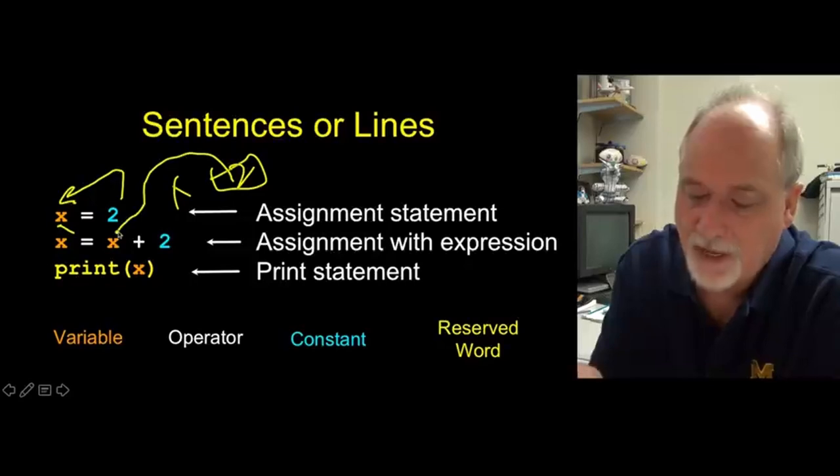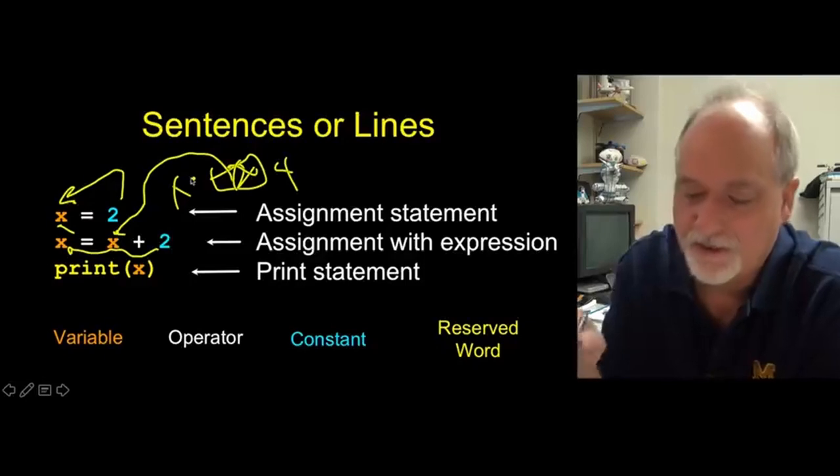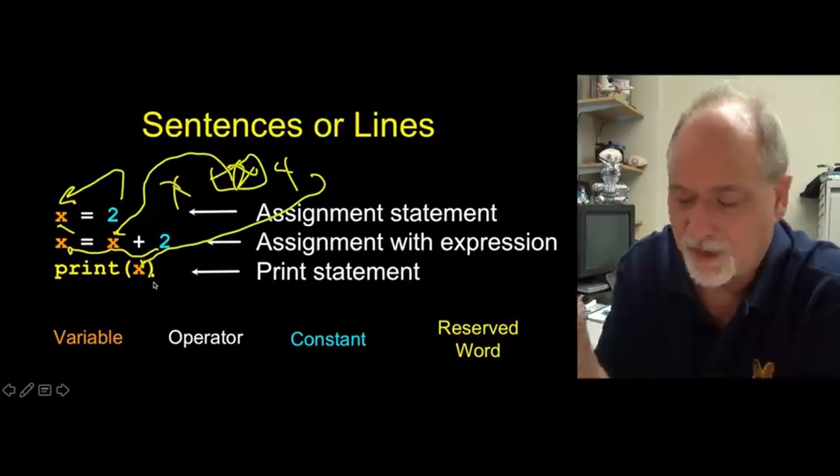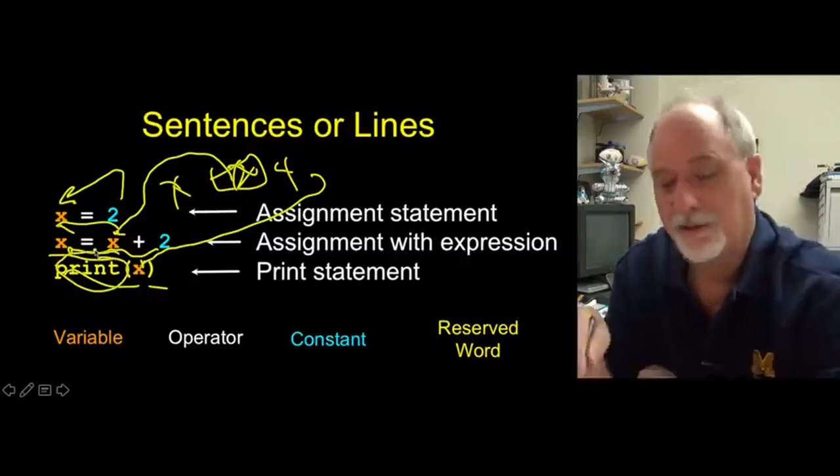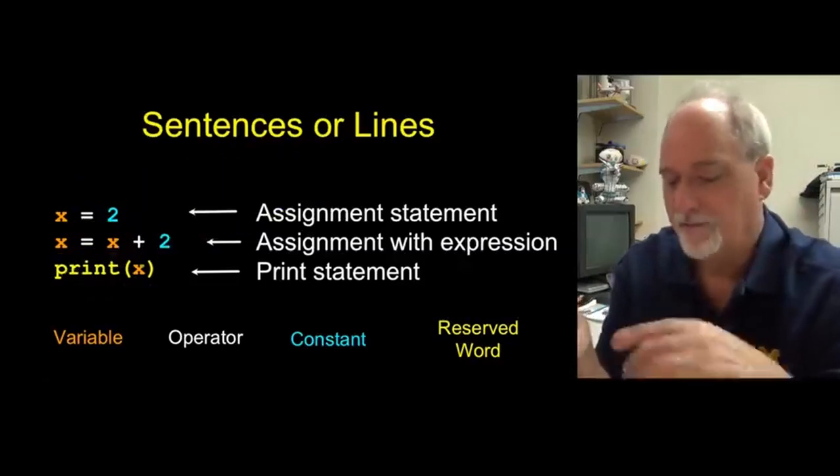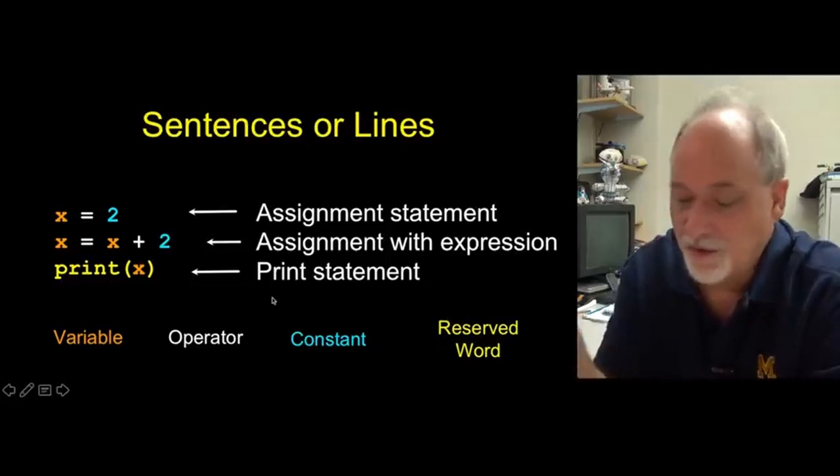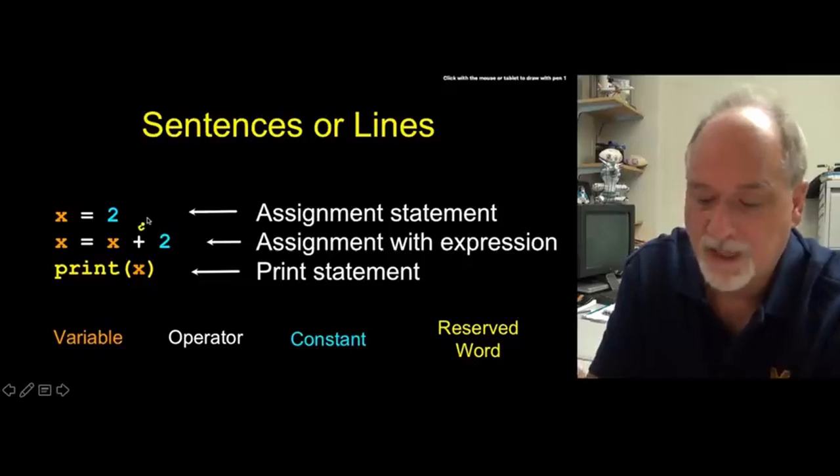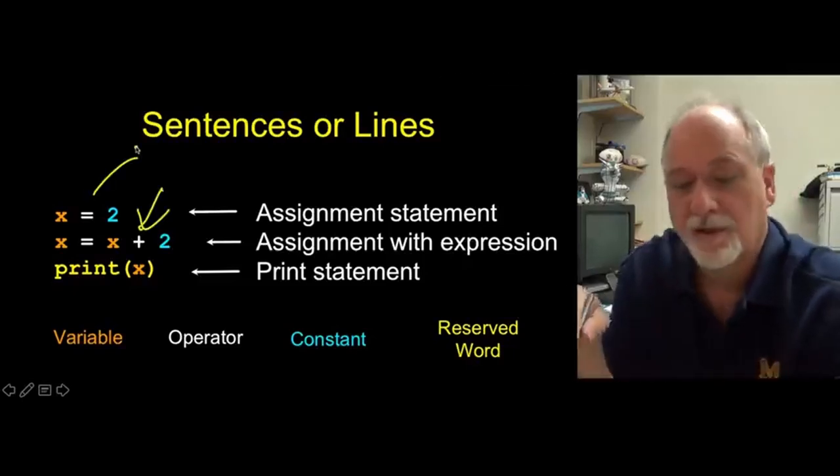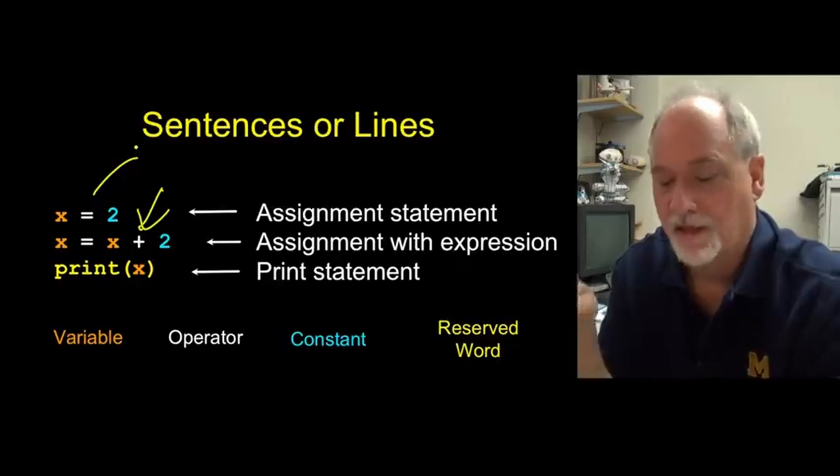Now pull that x back out, add two to it, which makes it four, and stick it back in x. And print x says go look up that thing that was an x and print it out. So these are like each line has something to it. I'm using a reserved word, there are operators, plus is an operator, equals is an operator. These things do things, and we'll learn all this stuff in time. These are the basic building blocks of lines of Python.